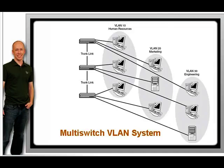VLANs can span across multiple switches using trunk links. This allows you to create a logical grouping of network users by function instead of location. If you want all the marketing people to be in their own broadcast domain and IP subnet, you can create a VLAN for them on the first switch. Then you can connect another switch using a trunk link to define the same VLAN on that switch, and the marketing users on the second switch are in the same VLAN and can communicate with the marketing users on the first switch, and are isolated from other VLANs on both switches.